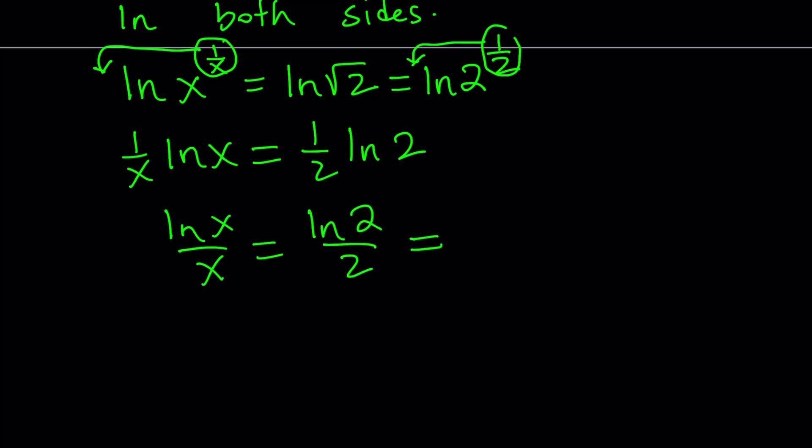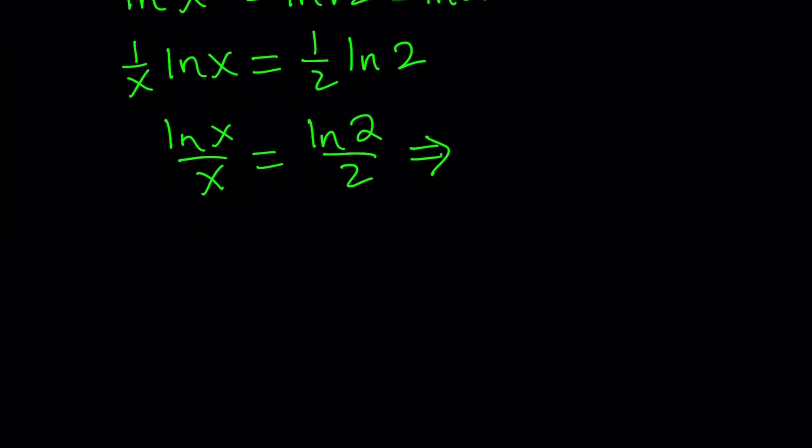From here, it's not too hard to see that x equals two works. But we are supposed to find two solutions. So how do you find the other solution from this equation?